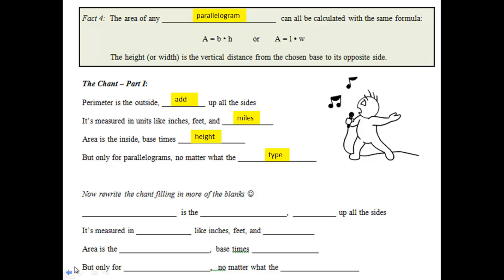You're going to rewrite the chant filling in the blanks — memorize it as best you can. Then you'll have some questions on your own, I believe five, six, or seven questions. Go ahead and fill those out and then click on the next video for Classwork Number 2. Thanks for listening.